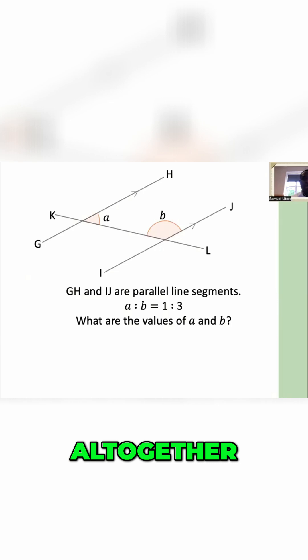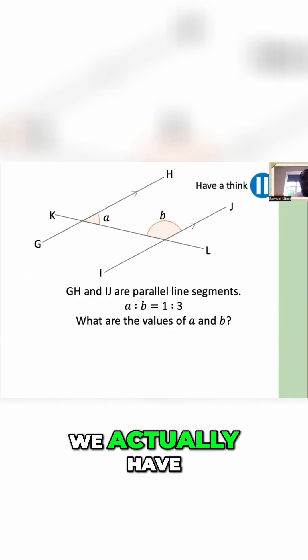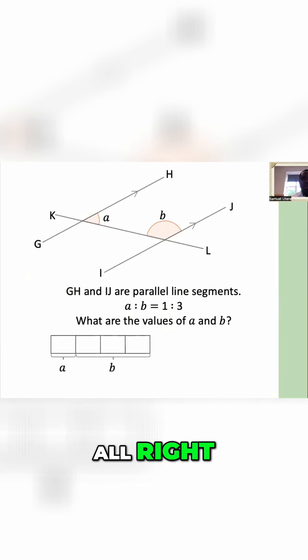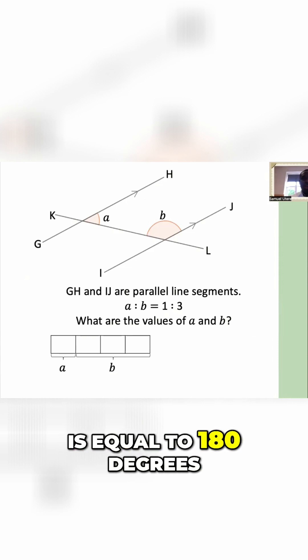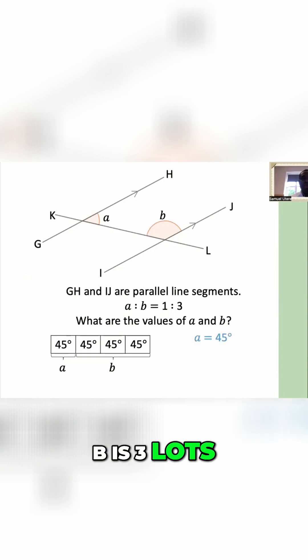So altogether, thinking about this as boxes, we actually have, using our bar model, A and B adding up to be four parts. Now, these four parts is equal to 180 degrees, which means each of these parts should be 45 degrees. So it means A is 45 degrees and B is three lots of A, which is 135 degrees.